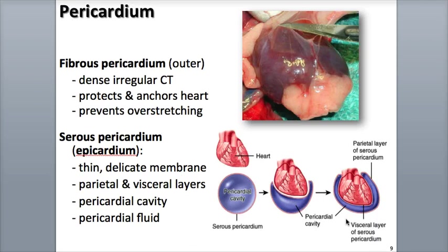There is a small amount of lubricating serous fluid called pericardial fluid located in the pericardial cavity between the parietal and visceral layers. This fluid functions as a liquid cushion that minimizes friction between the parietal and visceral layers as the heart contracts.